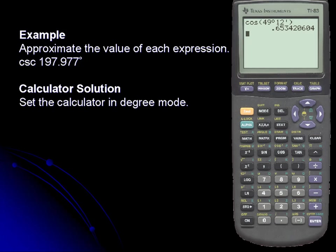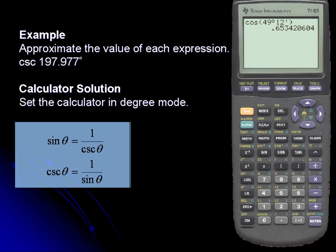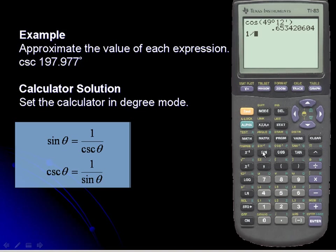Let's take a look at the calculator solution. Our calculator is already in degree mode, so there's no need to check that. There is no cosecant function, but from trigonometry we have reciprocal functions. The cosecant equals 1 divided by the sine of our angle. So I'll enter 1 divided by the sine of 197.977 degrees. Since I'm in degree mode, there's no need to enter the degree symbol, but I must enter minutes and seconds if present.